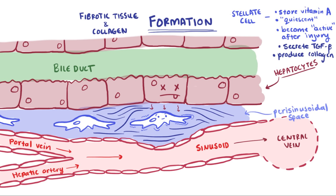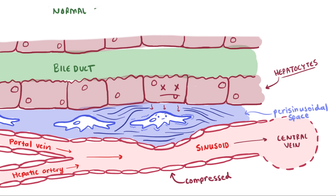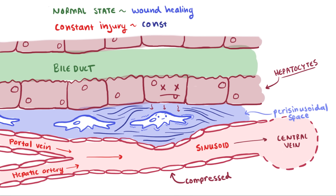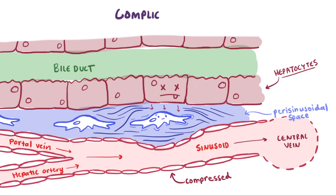As this fibrotic tissue builds up, it starts to compress the central veins and sinusoids. In a healthy, normal state, these stellate cells play key roles in the natural wound healing process. But when the liver cells are constantly injured, the stellate cells are constantly activated, and so they constantly produce collagen and factors that lead to fibrosis. This is when complications due to cirrhosis start to crop up.